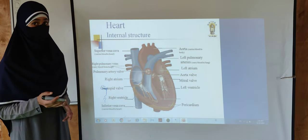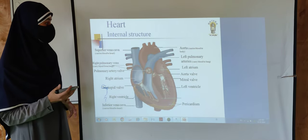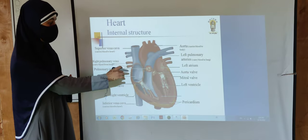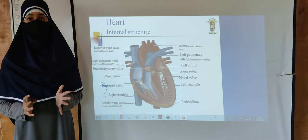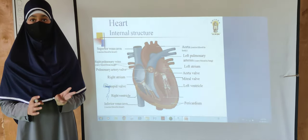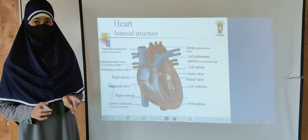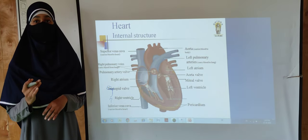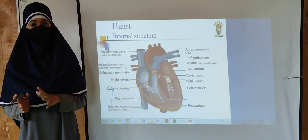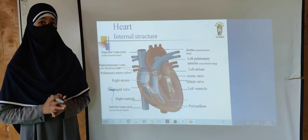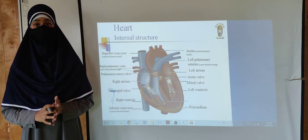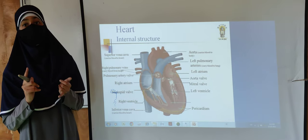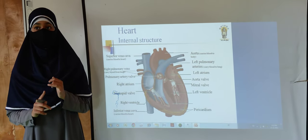The superior vena cava carries blood from the superior parts of the body — the head, neck, arms, and chest — to the heart. The inferior vena cava carries blood from the inferior parts of the body — the legs, feet, organs, abdomen, and pelvis — to the heart.